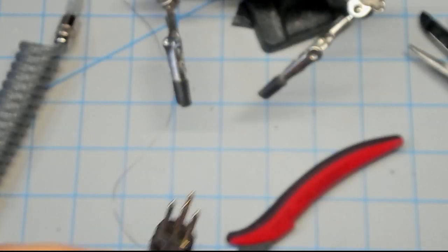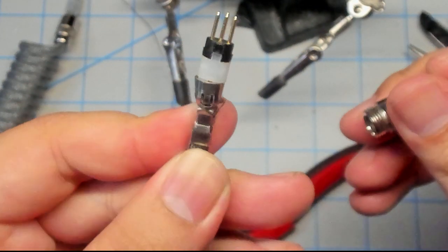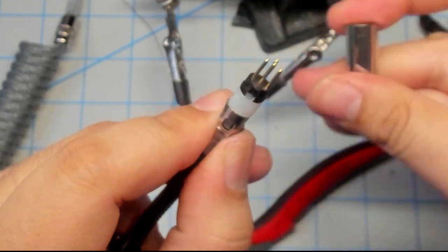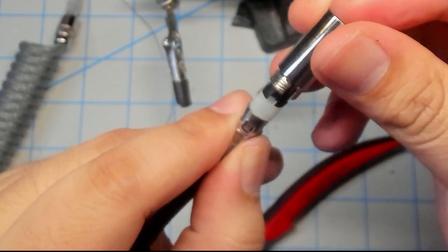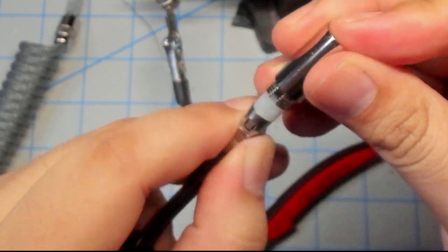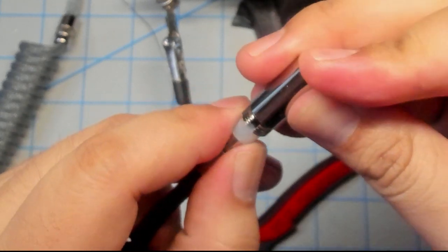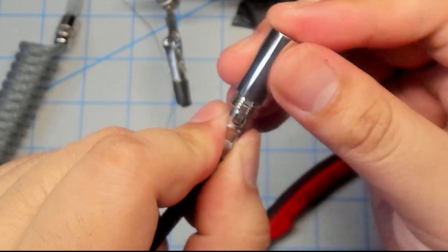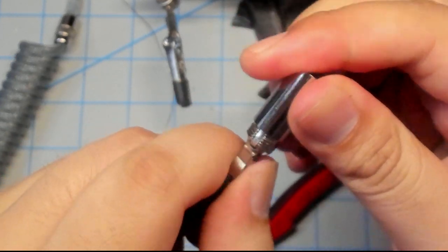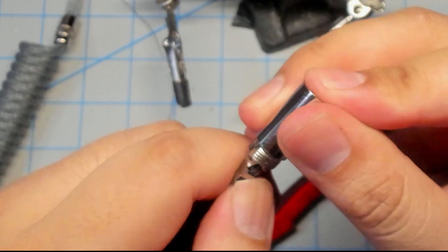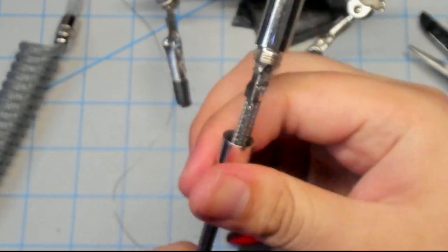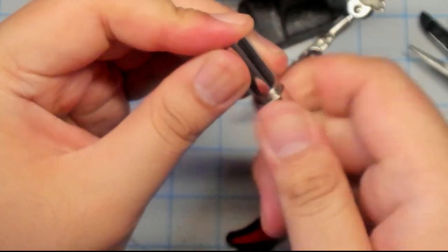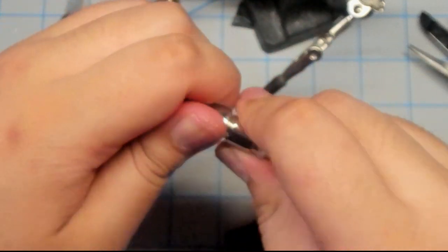After it's secured with the metal piece we can slide the housing back on it. There's a little cavity in the housing that should line up with the pieces we put together on the cable. Then we can slide up the end piece of the connector and twist it into place to complete this part of the cable.